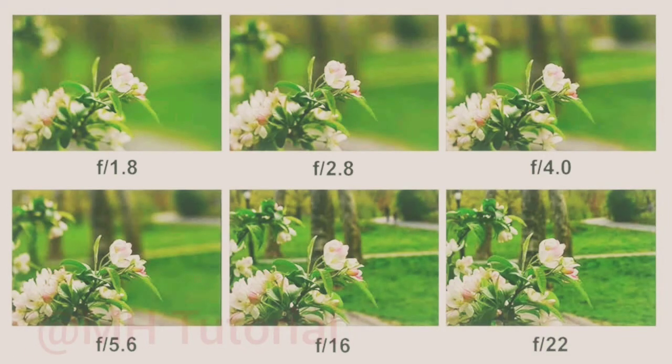The last picture has the maximum depth of field and is captured at an f-number of 22. In the first three images, did you find any road behind the flowers? Of course not. But the last three images captured it — in fact, in the sixth image it focused the road behind the flowers very smoothly. In photography, the distance between the nearest and the furthest objects in the same frame is called the depth of field. Using a higher f-number, the depth of field can be increased.